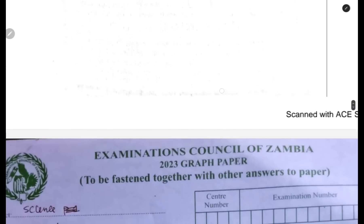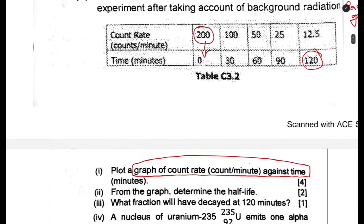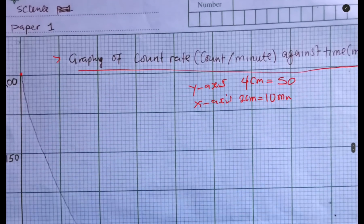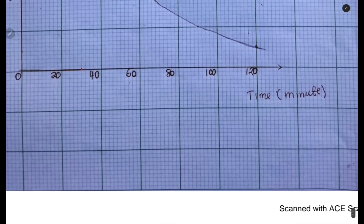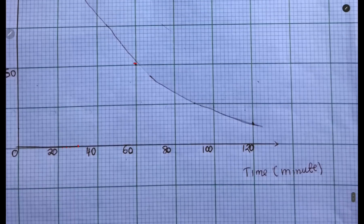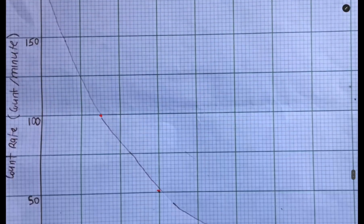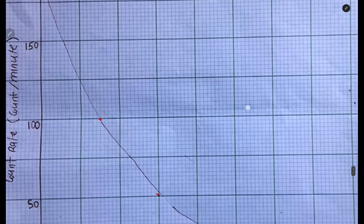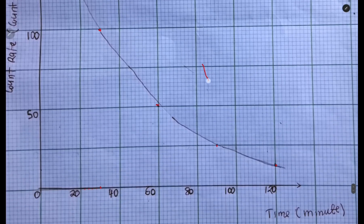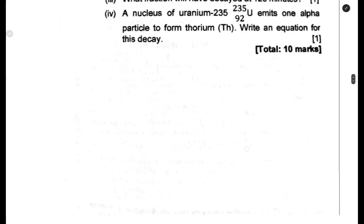The next one is 60 comma 50. Then the next point is 120 comma 12.5. These are the points we are going to put. Then you connect them with a smooth curve and it's going to appear like this. This is how the decay curve should appear. It's not supposed to be a straight line. If it becomes a straight line, just know you've done something wrong.